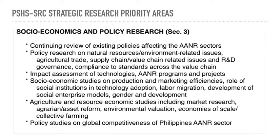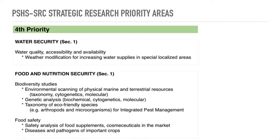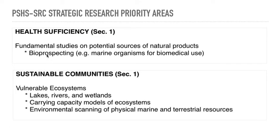Social economics and policy research. Food and nutrition — same as before — biodiversity studies, food safety, fundamental studies on potential natural production. Bioprospecting — as mentioned, a compound can be extracted from something and characterized later. For example, in marine organisms like cone shells, neurotoxins were discovered by the group of UP Marine Science Institute — that's an example of that kind of study.